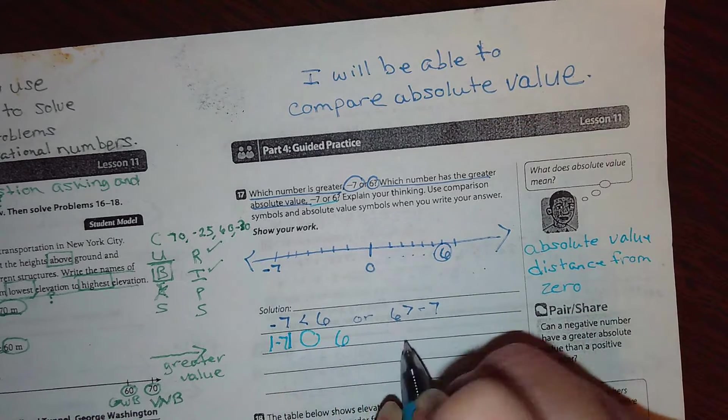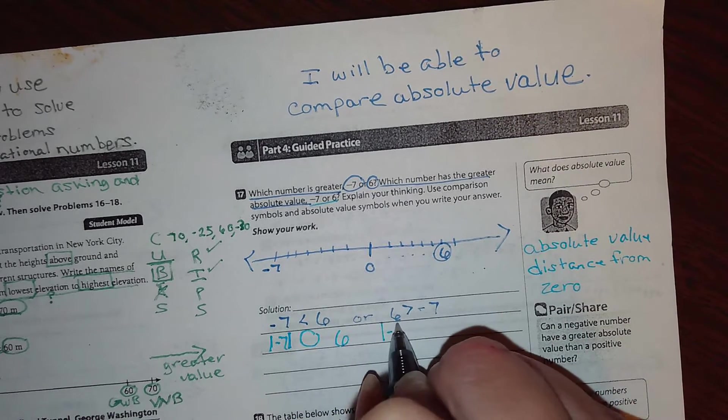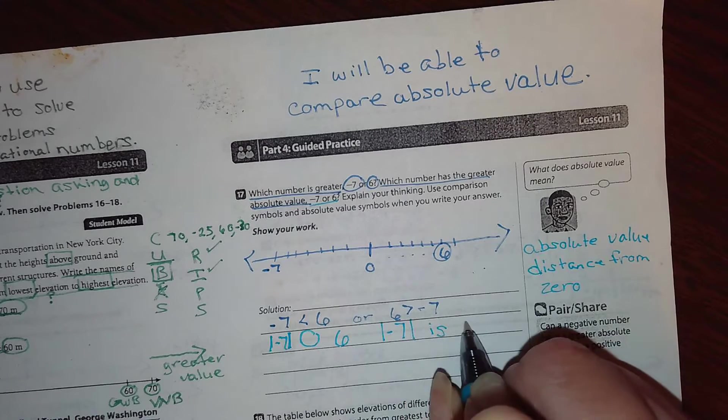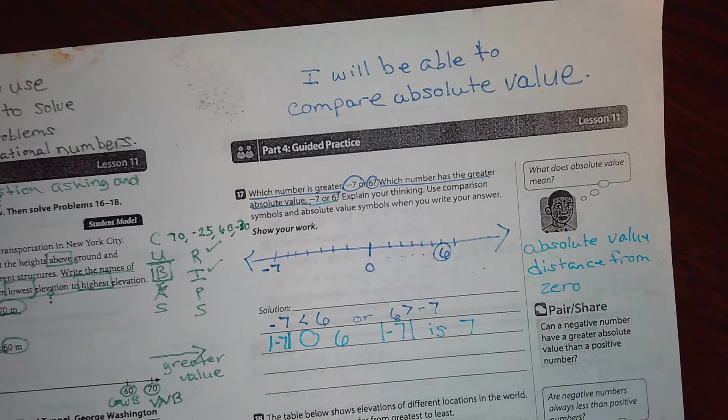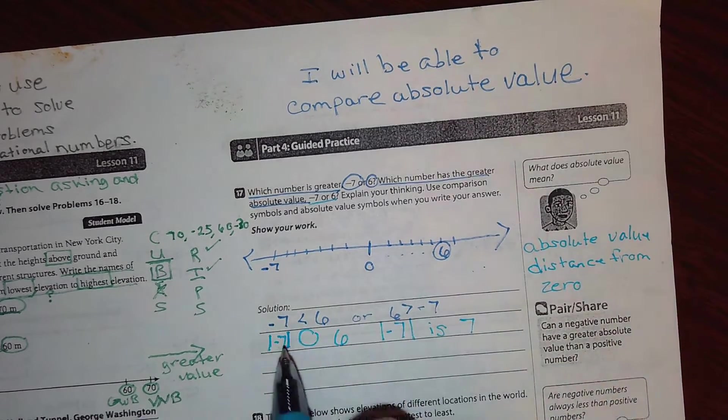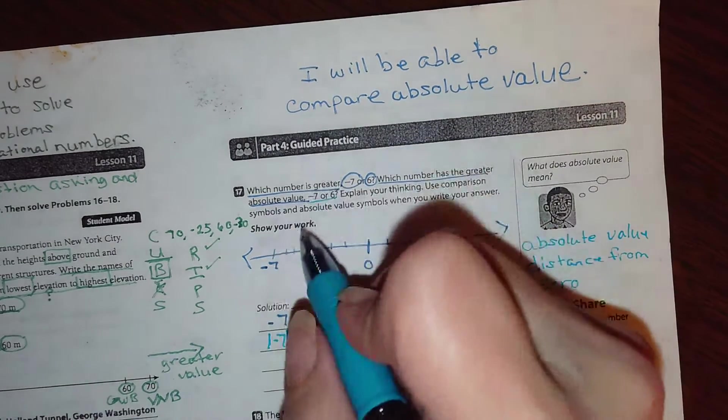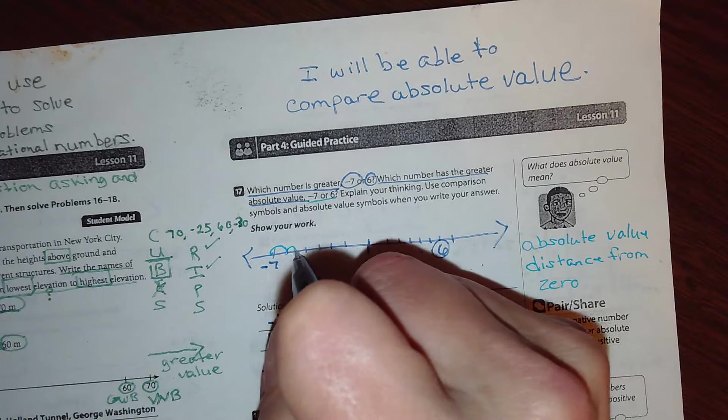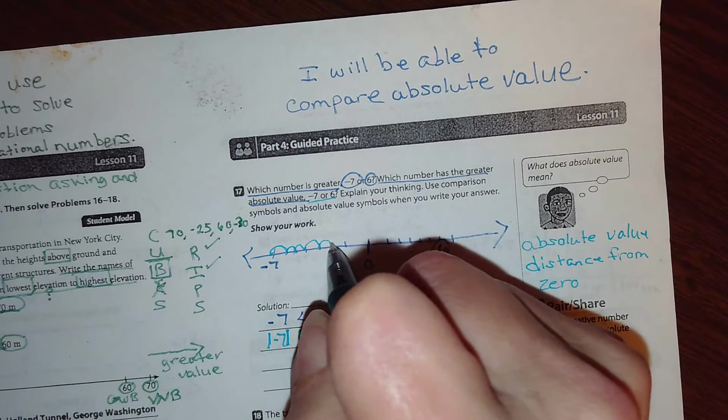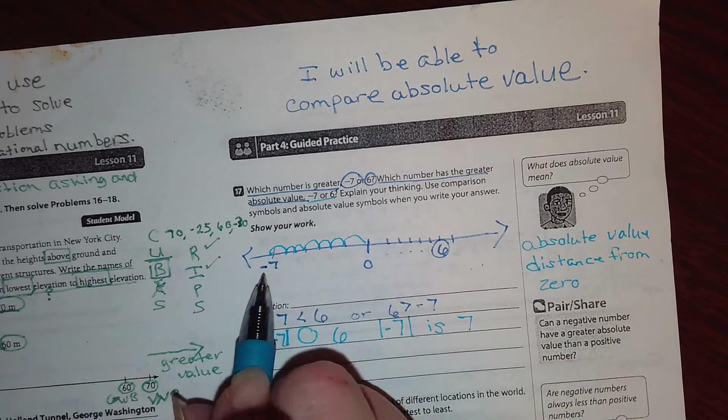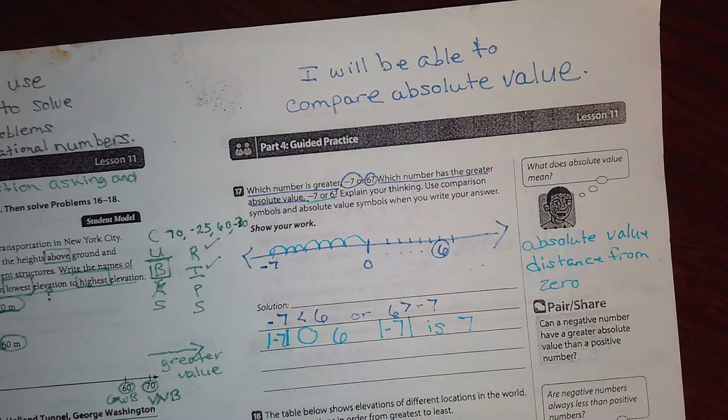Absolute value of negative seven is seven. Why? Because it's always positive. These lines mean absolute value. Okay. One, two, three, four, five, six, seven to get to zero. The distance from negative seven to zero is a positive seven.